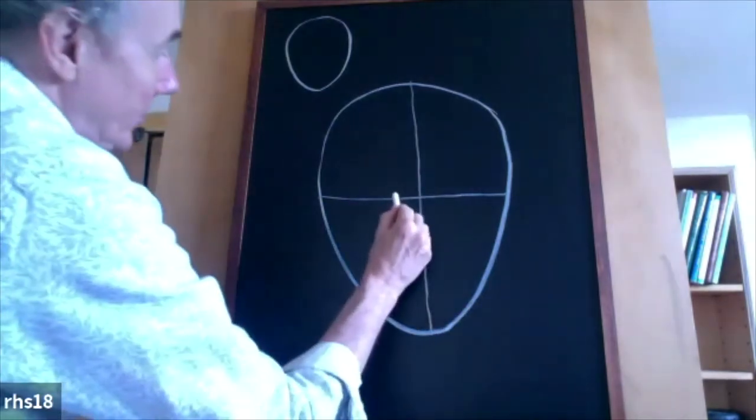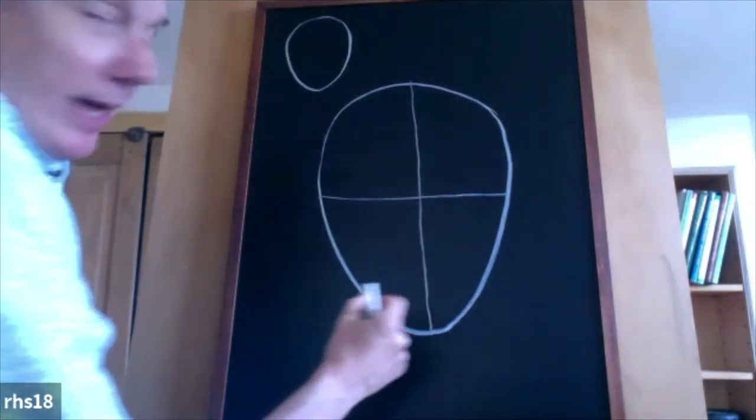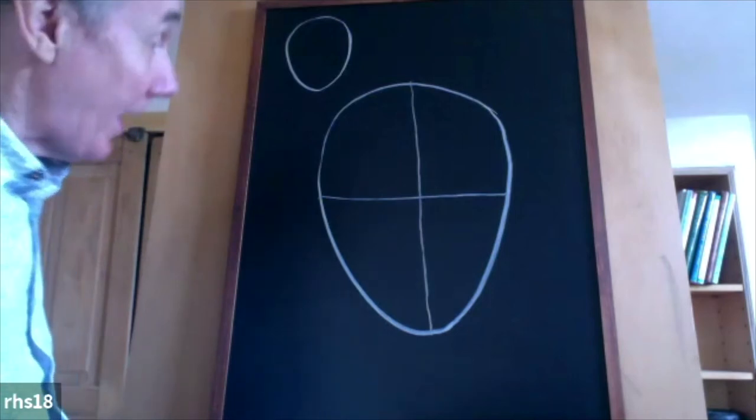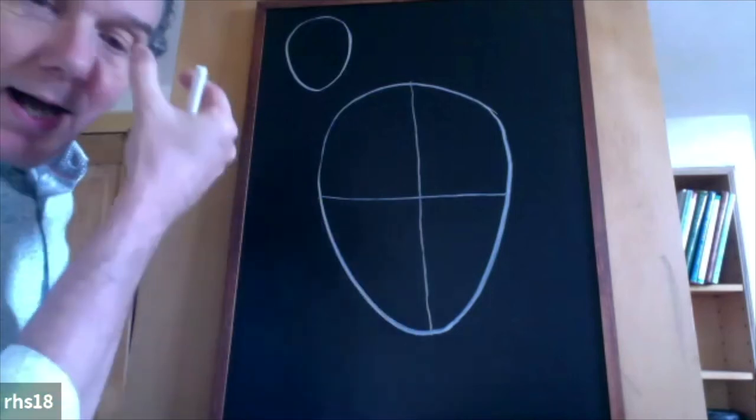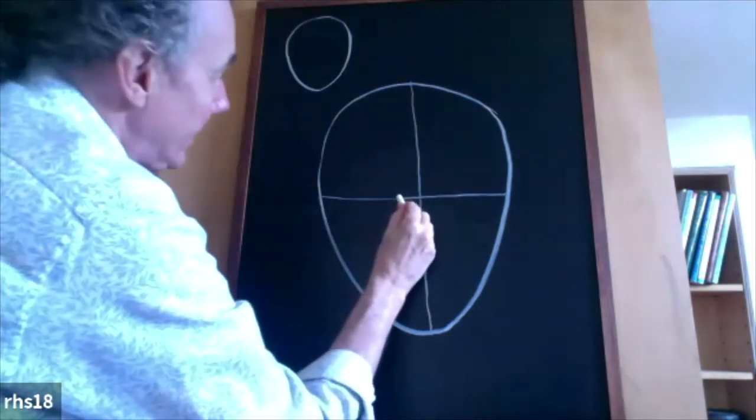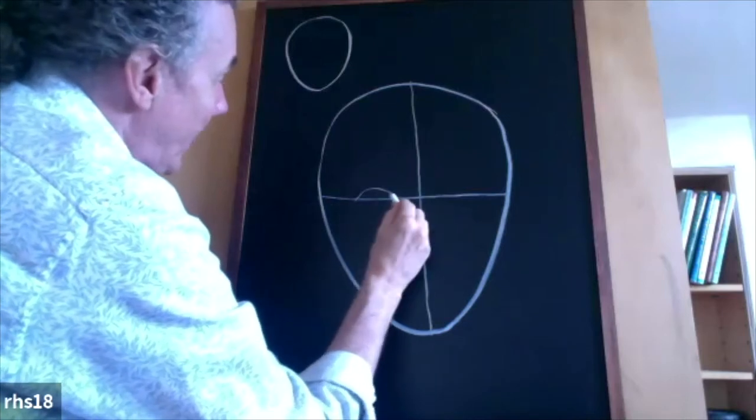So now I'm going to start by drawing an eye that you kind of, and actually, if you have a hand mirror or you're near a mirror, this might help. But basically your eye, the space in between your eyes is the width of one eye.